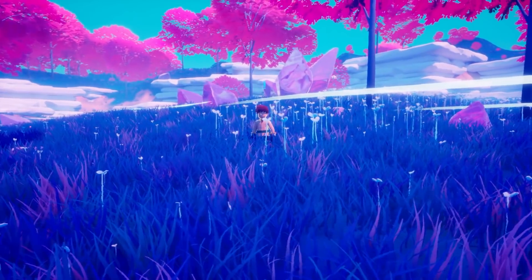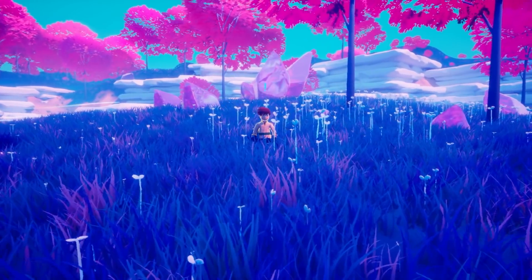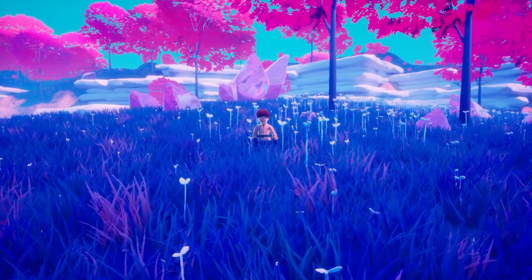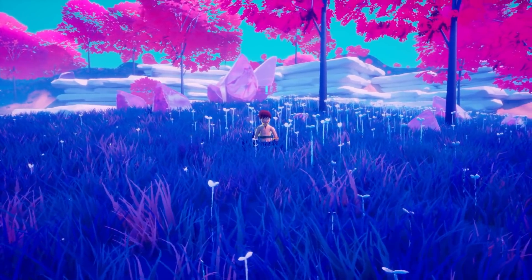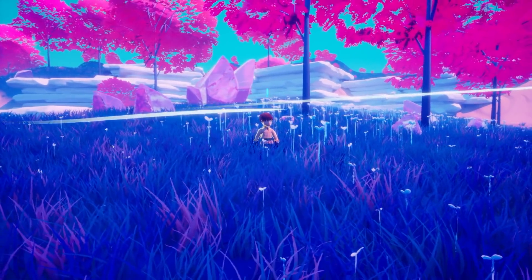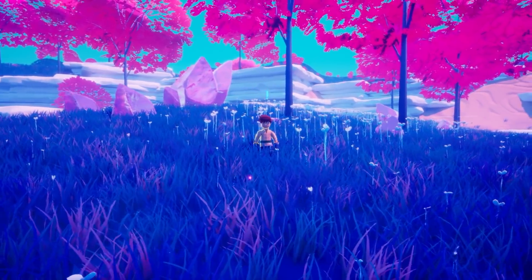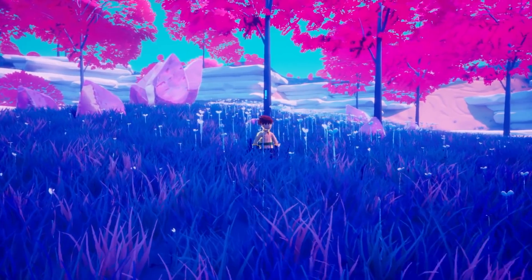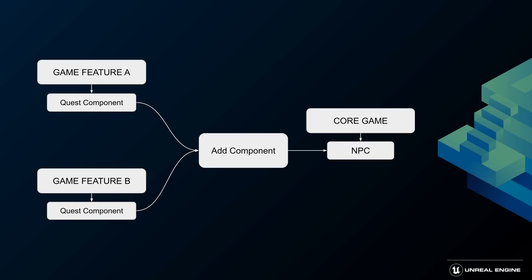Although in most cases your game features will exist in the game and be activated when the game is loaded, sometimes depending on additional factors and policies — like for example minimum game version required to activate the feature — you can also activate and deactivate them during runtime. For demonstration purposes I've set up a very simple quest system. Each game feature adds a quest component to the NPC who is waiting on the map, so I can activate my features one by one by completing a series of simple quests.